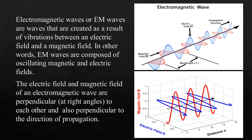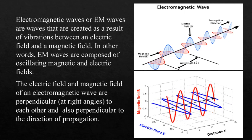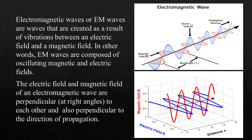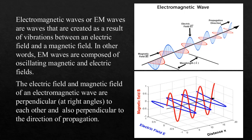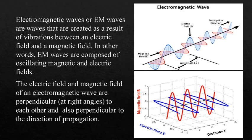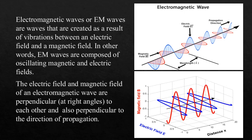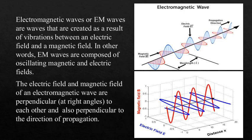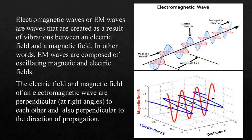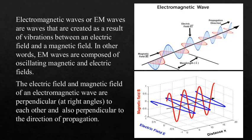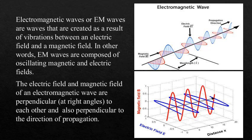Consider an electromagnetic wave propagating along the z direction. The electric field oscillates along the x direction and the magnetic field oscillates along the y direction. The electric field and magnetic field of an electromagnetic wave are always perpendicular to each other and also perpendicular to the direction of propagation of the wave.